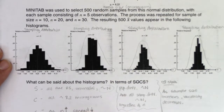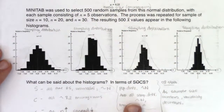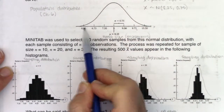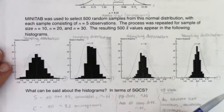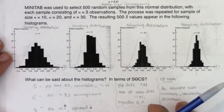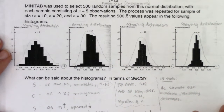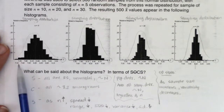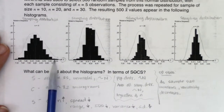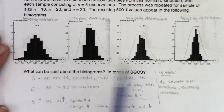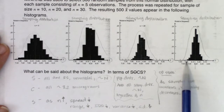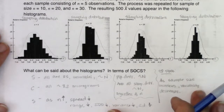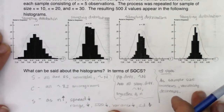I want you to notice what was in common: the center stayed the same in both example one and example two. Also, variability decreased in both cases. In example one, the spread went from about 6 to 10.5 on the x-axis, and when we looked at the sampling distributions, all the spreads got smaller — like 7 to 9, then 7.3 to 9.3, then 7.8 to 8.7 — so as sample size increased, variability decreased.